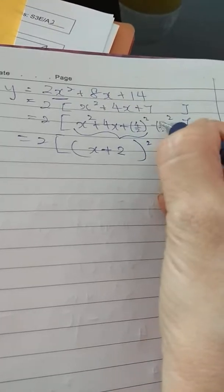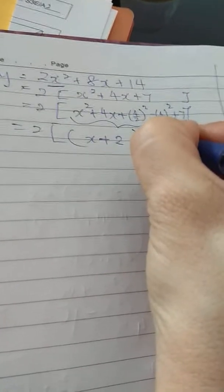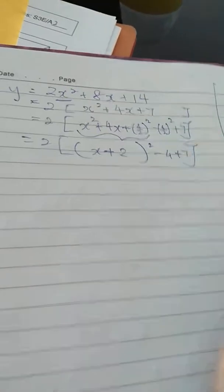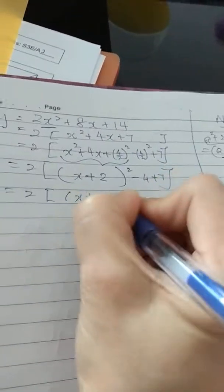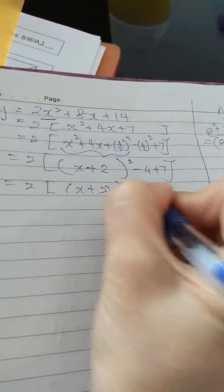This one simplified becomes minus 2 squared, which is minus 4 plus 7. So from here, you will have (x + 2)² + 3.